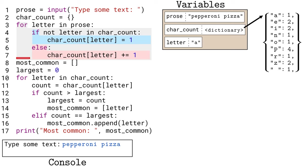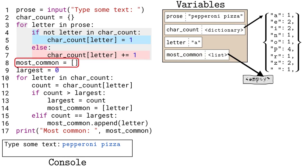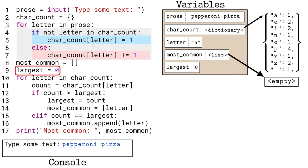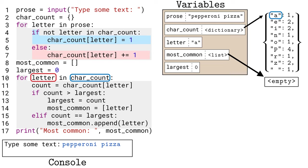Now we need Python to find the largest count value and one or more characters with that count. We keep track of those characters in the 'most_common' list, initialized with empty square brackets. We also need a variable 'largest' to track the largest count seen so far, initialized to zero. To go through all characters we have counted, we use a second for-each loop on line 10. The loop variable 'letter' steps through all keys in the 'char_count' dictionary. We retrieve each value using square bracket notation on line 11 and store it to a temporary variable called 'count'.